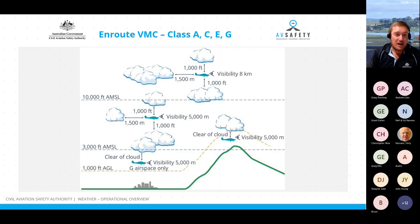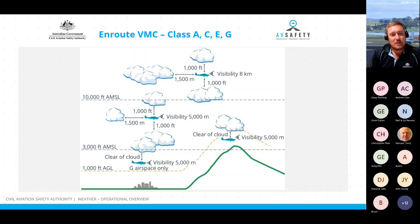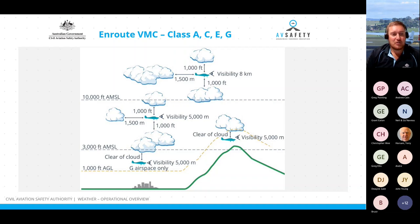For en-route VMC criteria under 10,000 feet for VFR aircraft, we need a minimum visibility of five kilometres, 1,000 foot vertical separation from cloud, and 1,500 metres horizontal separation from cloud. If flying under 3,000 feet or 1,000 foot AGL — whichever is the higher — we need to remain clear of cloud with a minimum flight visibility of 5,000 metres, in Class G airspace only. Also, if flying at 3,000 feet AMSL or 1,000 feet AGL, we must carry a radio and use it on the appropriate frequency.